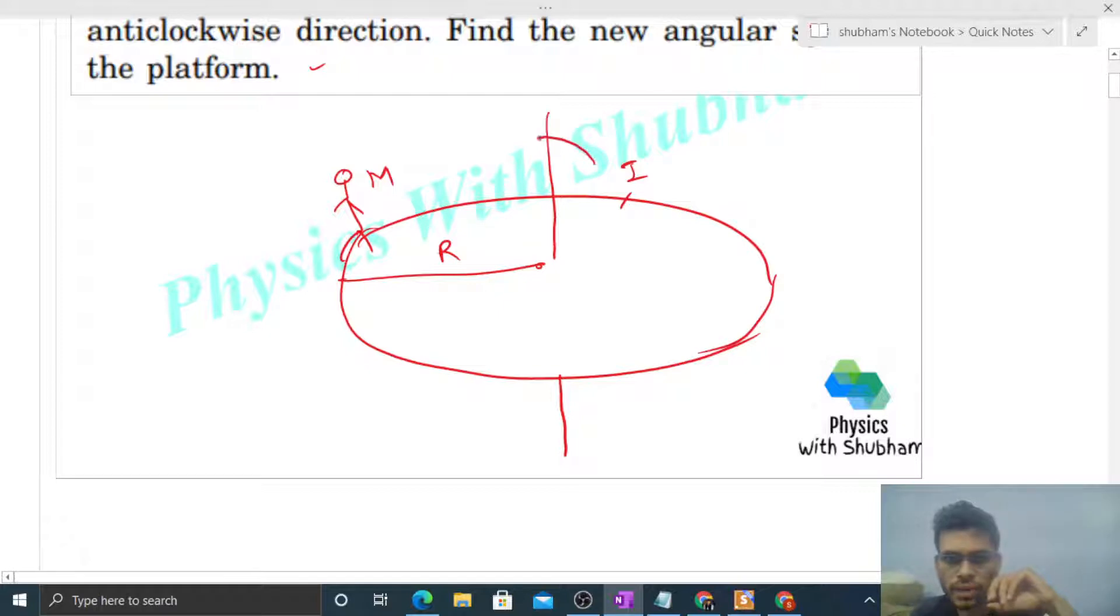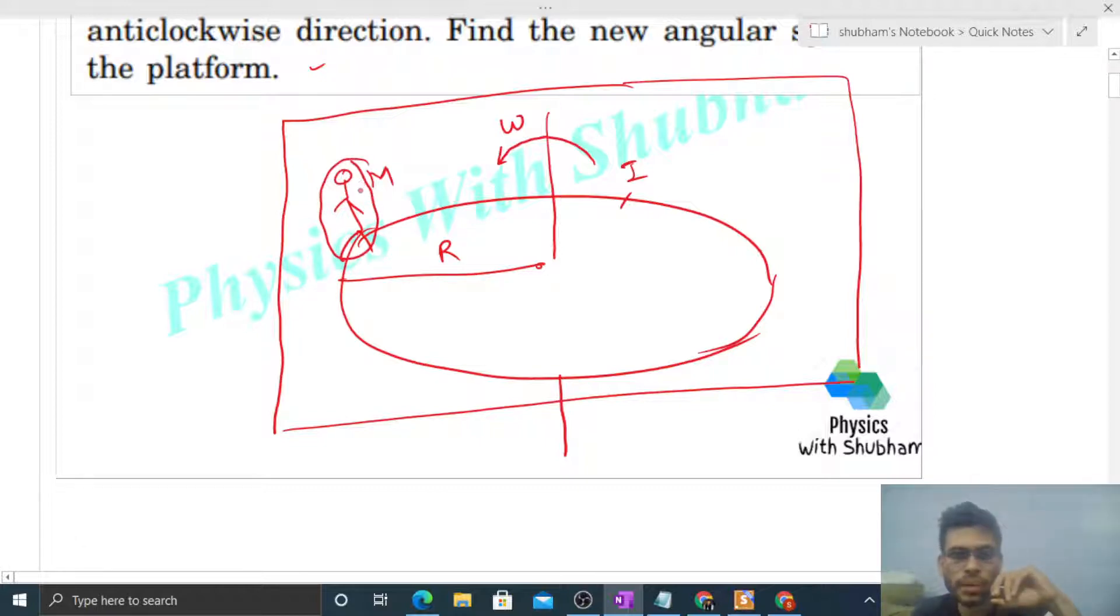First, I am defining my system as this kid plus this platform. Now what happens? The kid starts walking on the rim of this platform. You can see, when the kid walks on the surface, there will be a friction force between this kid and the platform, but that force will be an internal force for the system.